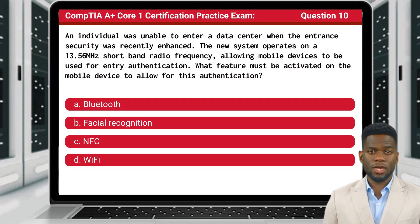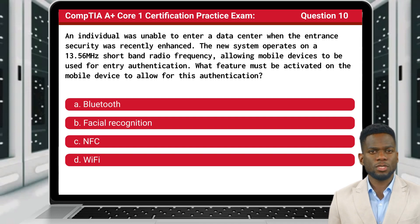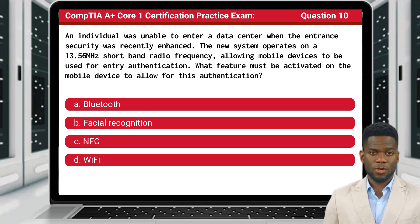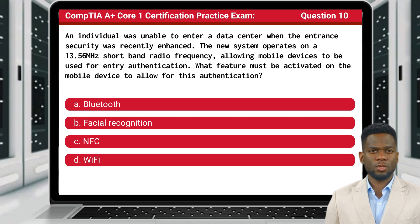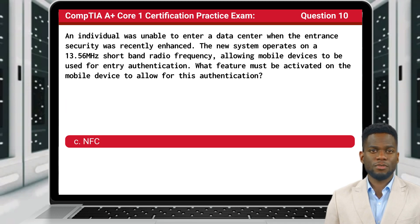Question 10. An individual was unable to enter a data center when the entrance security was recently enhanced. The new system operates on a 13.56 MHz shortband radio frequency, allowing mobile devices to be used for entry authentication. What feature must be activated on the mobile device to allow for this authentication? The answer is C, NFC.